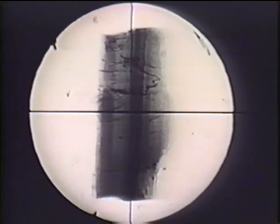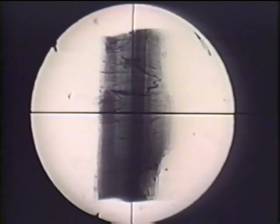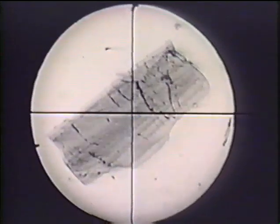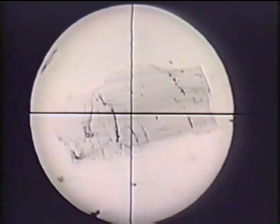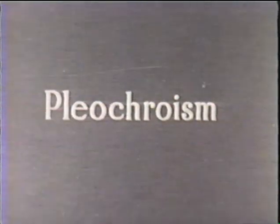Evidently the absorption of the light varies greatly according to the vibration direction. In white light the two vibration directions may give rise to quite different colors. This property is called pleochroism.